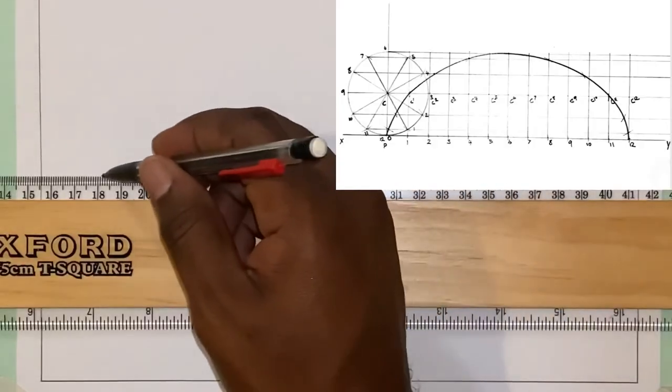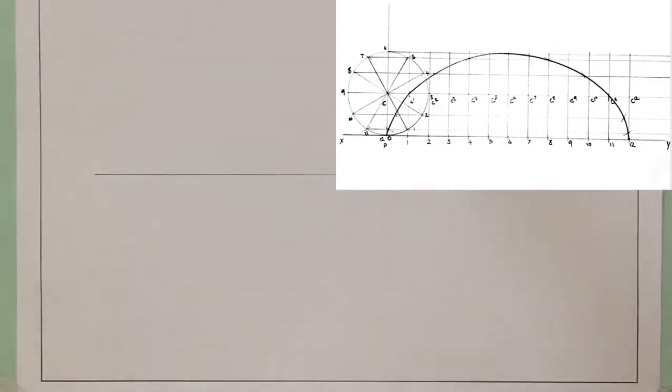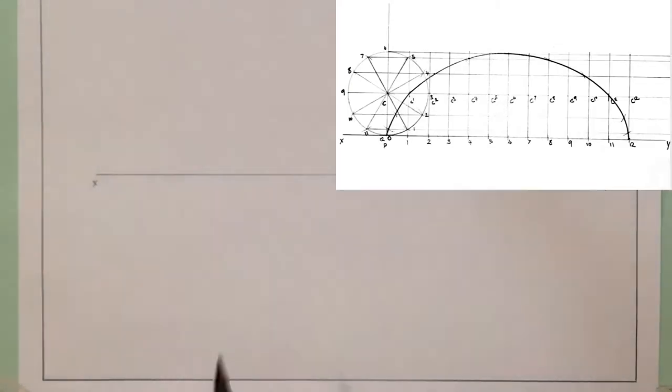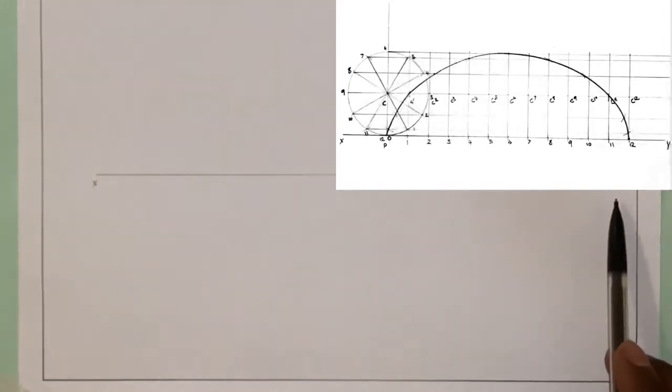I'm going to start our drawing for today. The first thing I'll start with is my start line, and I'm going to label it XY. The second step is we are going to draw our circle — the diameter of that circle is 50 millimeters. Our circle is going to rest directly on the XY line, and the point of our locus is also going to rest directly on that XY line. I'm going to go ahead and construct my circle.